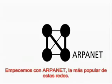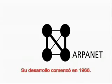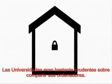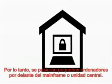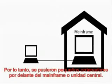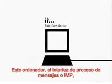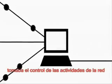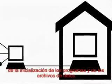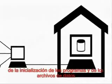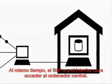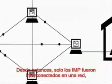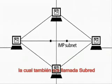Let's begin with the ARPANET, the most familiar of these networks. Its development began in 1966. Universities were generally quite cautious about sharing their computers. Therefore, small computers were put in front of the mainframe. This computer, the interface message processor, took over control of the network activities, while the mainframe was only in charge of the initialization of programs and data files. The IMP also served as interface for the mainframe. Since only the IMPs were interconnected in a network, this was also called the IMP subnet.